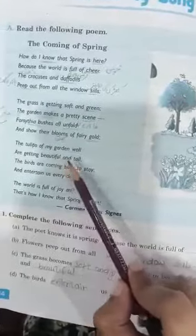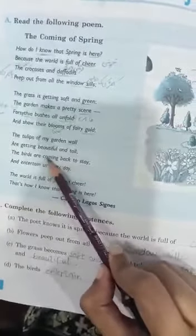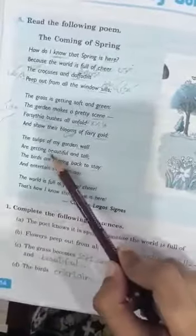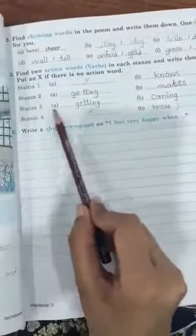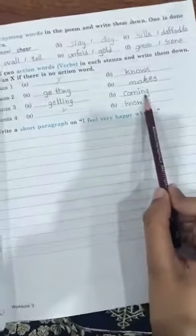Next is stanza number three. There are two verbs: 'coming' and also 'getting.' There are two verbs in the third stanza, so we will write in front of third stanza 'getting' and 'coming.'